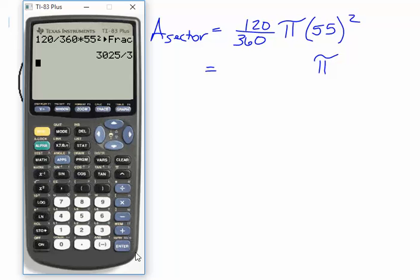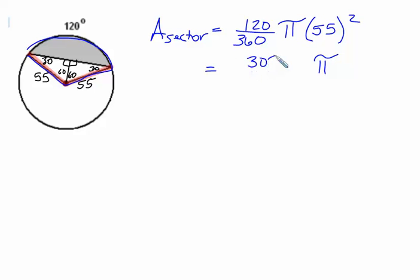We do not want to see decimals. We do not want mixed numbers. We want improper fractions. So we get 3025 all over 3 times pi as the area of the sector.